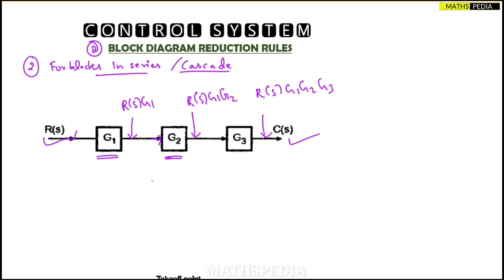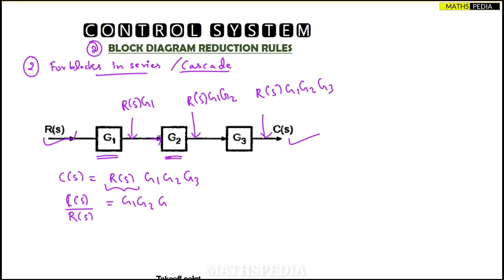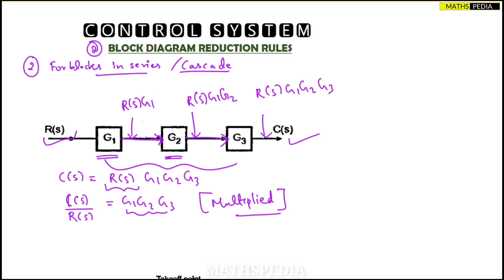We've reached the output C(s), so we can write C(s) = R(s)·G1·G2·G3. Rearranging, C(s)/R(s) = G1·G2·G3. All the blocks are multiplied together. The rule is: whenever transfer functions are directly connected to each other in series, we simply multiply all the blocks to get the overall transfer function.